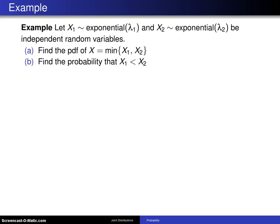The previous examples in this section were about determining whether or not two random variables were independent. In this example, we're going to assume that random variables are independent and then calculate some quantities associated with those independent random variables. Here's the example.